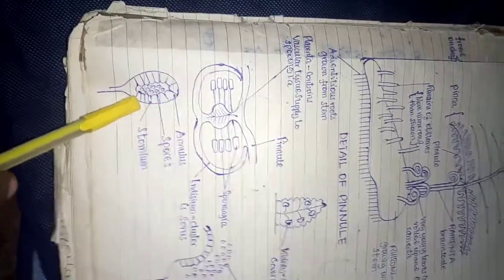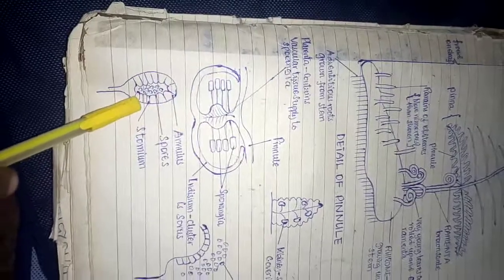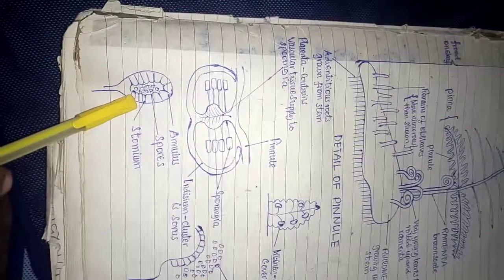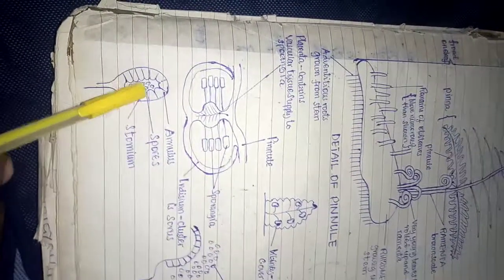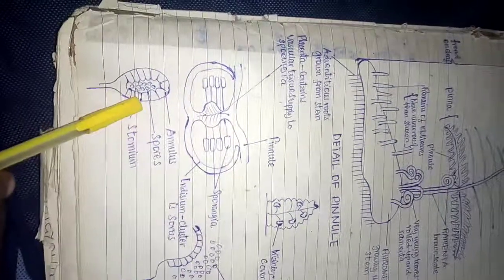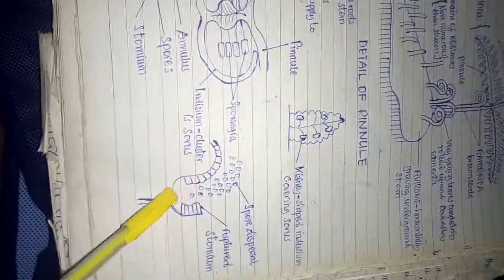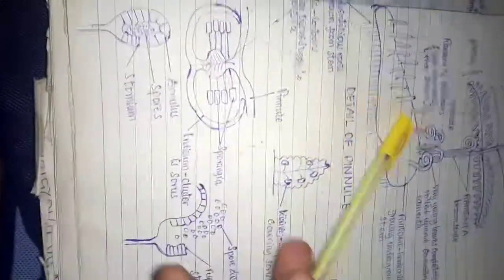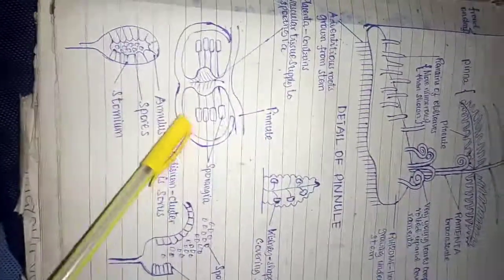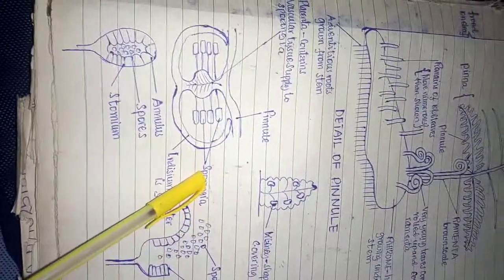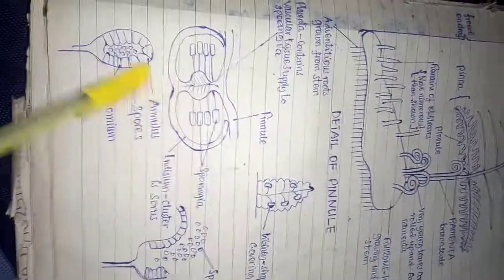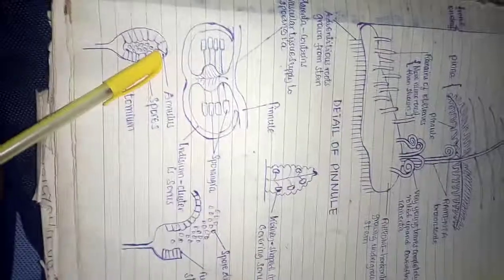The outside cells have thick walls called the annulus and thin walls called the stomium. During total dryness there is a catapulting action of the sporangia, which results in the releasing of spores. This catapulting results in spore dispersal, especially the spores inside the sorus — the cluster of sporangia behind the pinnule, known as the sorus.